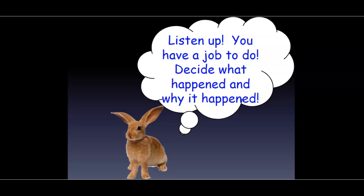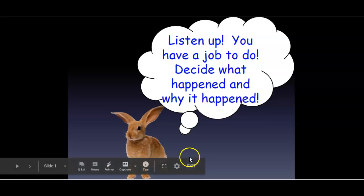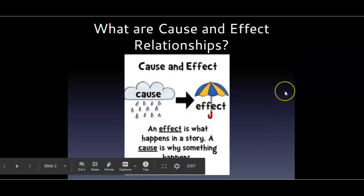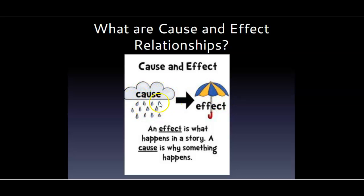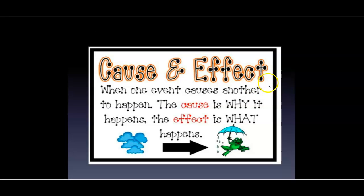Today we're going to talk about cause and effect, and you are going to have a job to do. You have to decide what happens, but then you have to look a little bit deeper and decide why the things happened. So let's talk just for a minute about cause and effect relationships. An effect is what happens in a story. The cause is why something happens. When one event causes another to happen, this is when we have the cause and effect relationship.